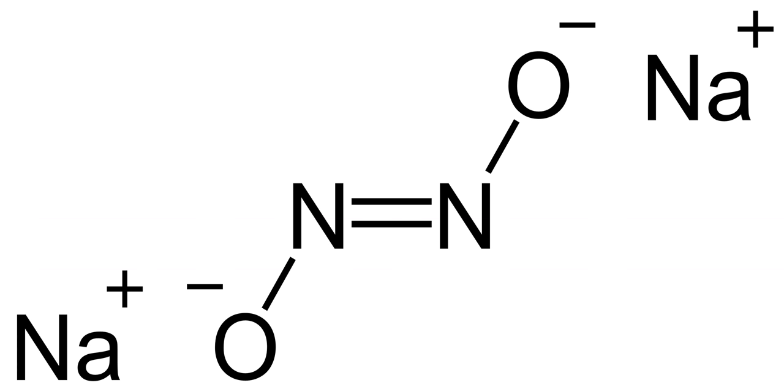The cis isomer of sodium hyponitrite is a white crystalline solid, insoluble in protic solvents, and, unlike the trans isomer, decomposed by water and other protic solvents.